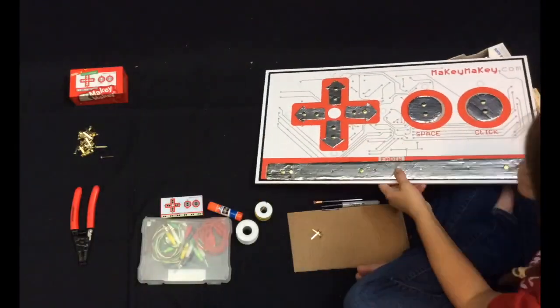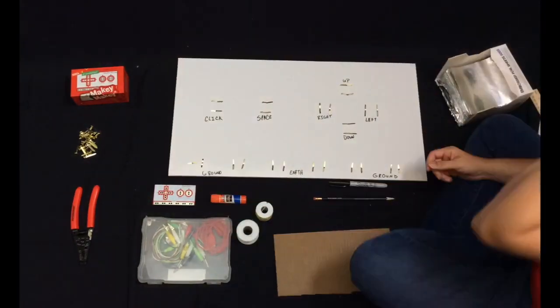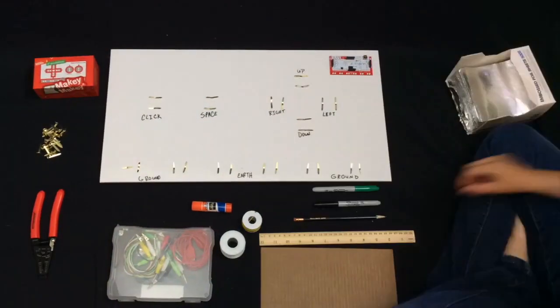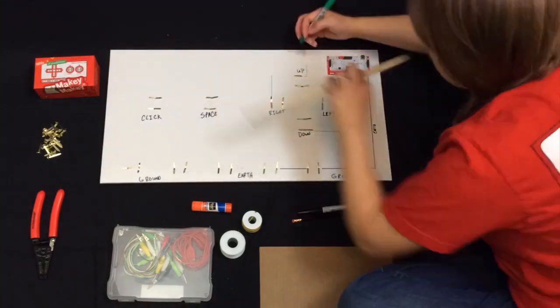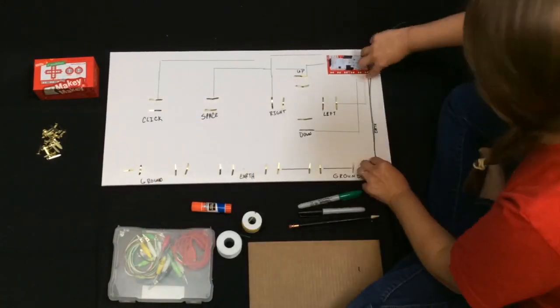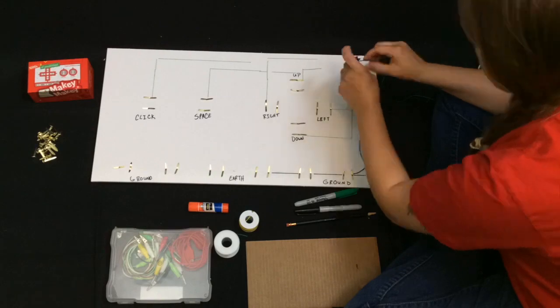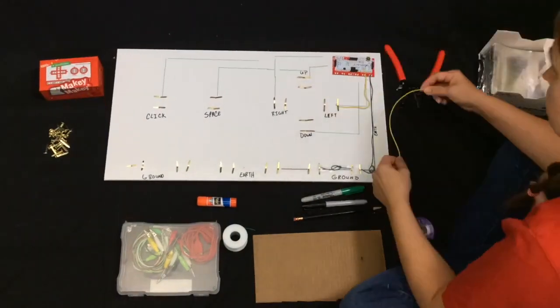Now that the giant Makey Makey looks like the front of a real Makey Makey, let's make the whole thing work just the same. Use a ruler to measure your circuit traces for each input or key press. Use that line you just drew to measure your hookup wire and start placing the wire from the brad to the matching key press on your Makey Makey.